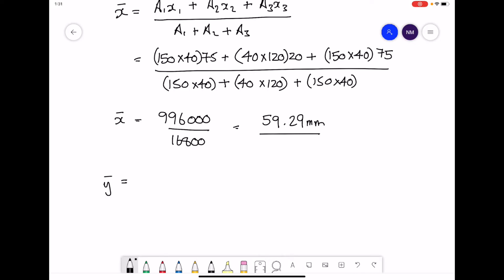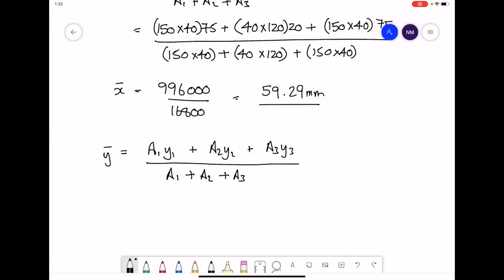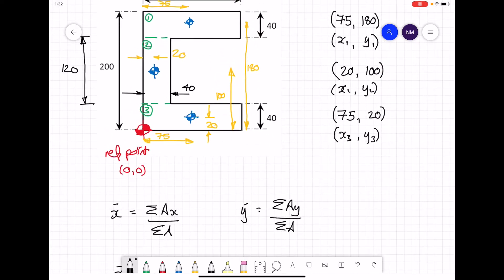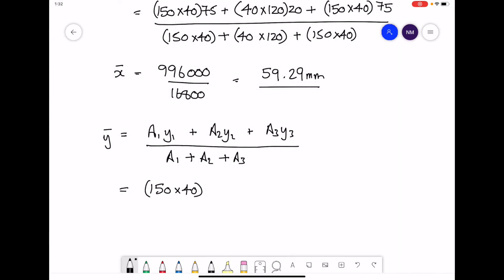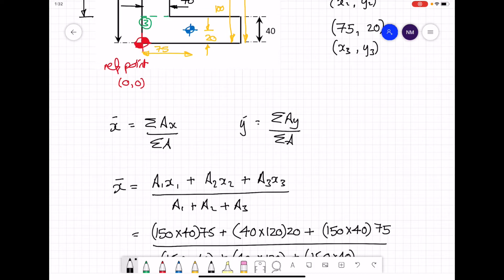Repeating the process now for y-bar. So the formula is area 1 times y1 plus area 2 times y2 plus area 3 times y3 over the total cross-sectional area, which is area 1 plus area 2 plus area 3. Now fill our values in. 150 by 40 is the area. y1 is a value of 180. Area 2 is 40 by 120. The y2 value was 100. Area 3, 150 by 40. The y3 dimension was a value of 20.